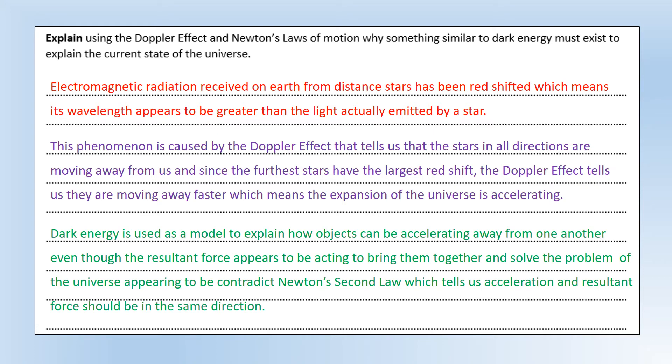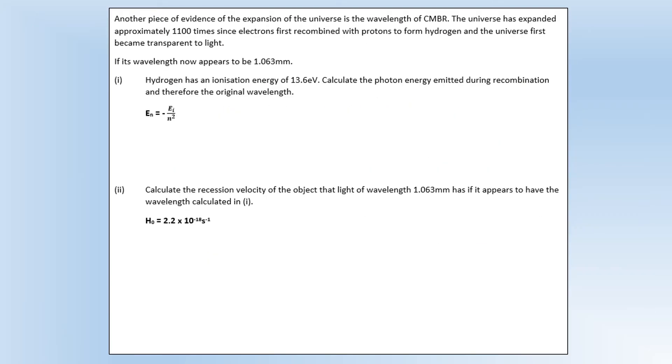And this is where the problem with Newton's laws comes in. Generally speaking the forces acting on the universe are gravity. So it doesn't matter if it's dark matter or matter, they have an attractive force which cannot explain why the universe is expanding. So dark energy is used to explain how objects can be accelerating away from one another even though the resultant force of gravity appears to be acting to bring them together. And that solves the problem because Newton's second law tells us the resultant force and acceleration should be in the same direction. So that's the problem with Newton's law and dark energy is incorporated to try and fix that issue and explain why it's expanding.